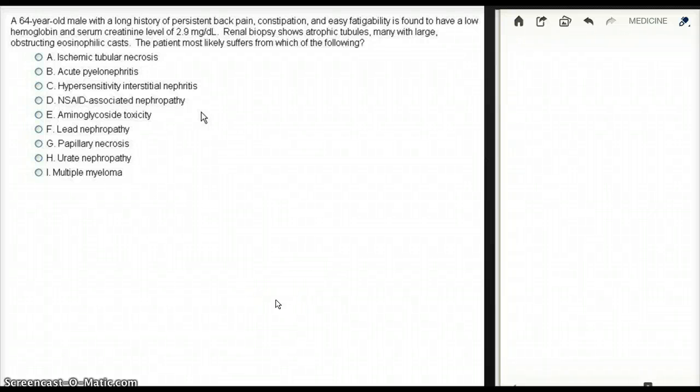This question deals with a 64-year-old male with long history of persistent back pain, constipation, easy fatigability, is found to have low hemoglobin and serum creatinine level of 2.9. That's high. Renal biopsy shows atrophic tubules.